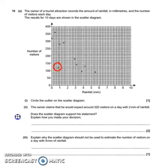Then part two, the owner claims he would expect around 320 visitors on a day with 2 millimeters of rainfall. So if we look on our chart, 2 millimeters of rainfall, 320, that would be about there.